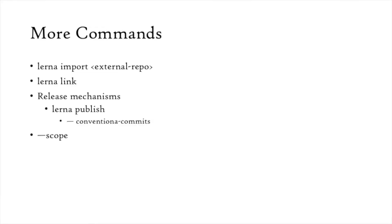One of my favorite things about Lerna is `lerna import`, because it allows you to import an external repository into your current monorepo. For example, if I had an external repository called `add`, I could simply use `lerna import` and have my add package inside my packages folder — and it would retain its git commit history. That's incredibly useful. `lerna link` is used just to link dependencies across your packages, and `lerna publish` is your preferred publishing mechanism.